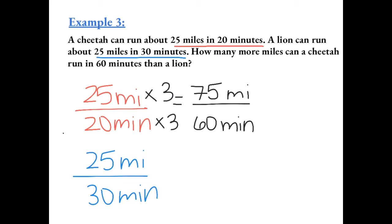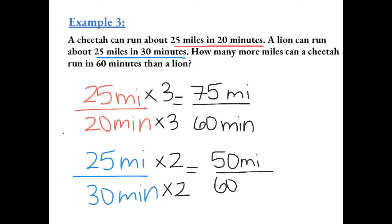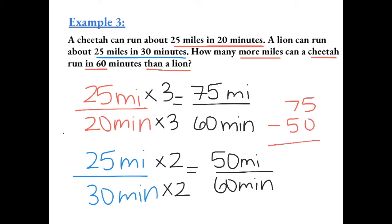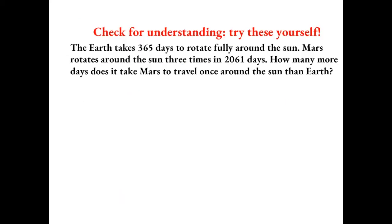To find how many miles the lion can travel in 60 minutes, we multiply by 2, which gives us 50 miles in 60 minutes. Now, how many more miles can the cheetah run than the lion? The cheetah runs 75 miles and the lion runs 50 miles in 60 minutes, so the cheetah can run 25 more miles than the lion. Try this one yourself to check for understanding.